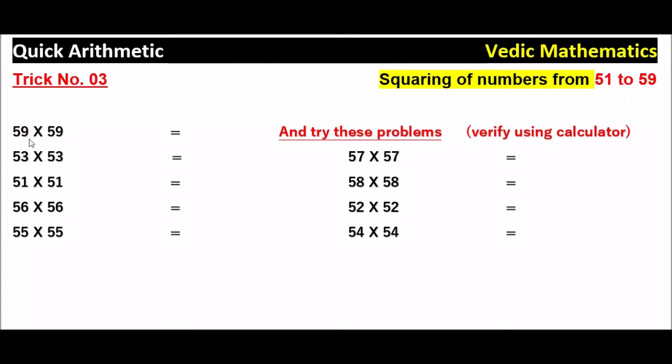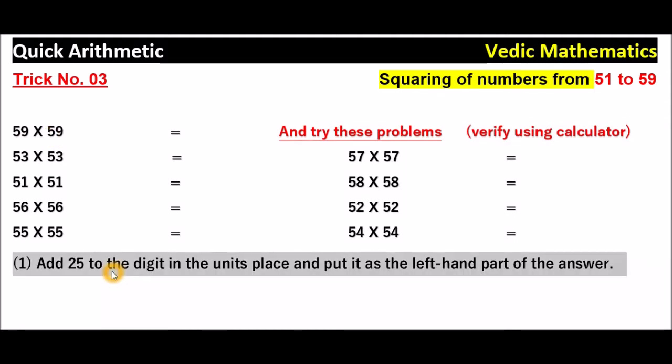See some examples given here. 59 into 59, the first one. So what is the first step? The first step is add 25 to the digit in the units place. So what is the digit in units place? 9 is there. So add 25 to 9. 25 plus 9 is 34.